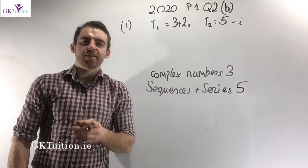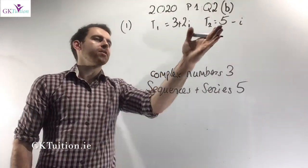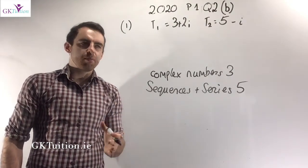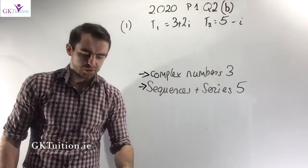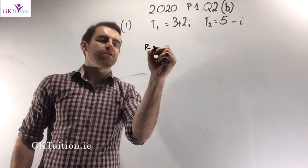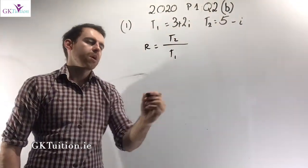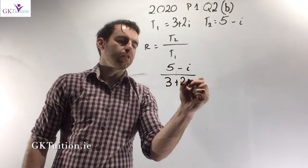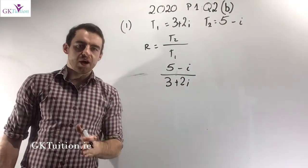In question 2 part B, we're given a geometric series. The first term is 3 plus 2i and the second term is 5 minus i. We're asked to find the common ratio. The theory comes from complex numbers 3 and sequences and series 5. From sequences and series, you need to remember that the common ratio of a geometric series is any term divided by the previous term — for example, the second term divided by the first term.